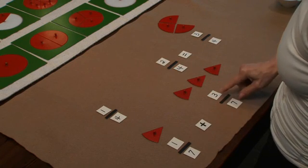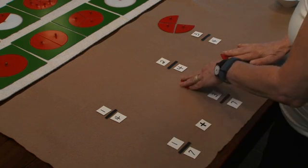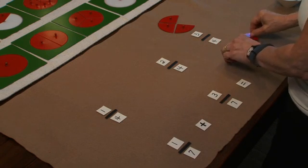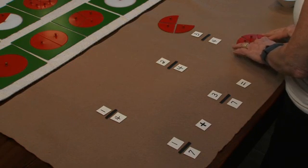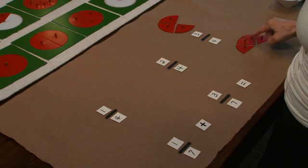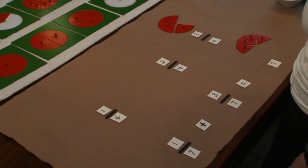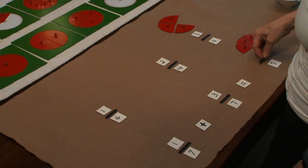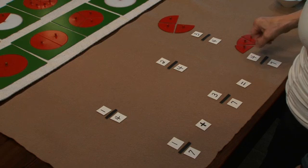One-seventh plus three-sevenths equals... One-two-three-four. Four-sevenths.